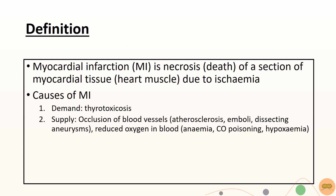MI refers to the death of myocardial tissue due to ischemia. Causes of MI can be split into demand and supply reasons. Demand for oxygen increases in conditions such as thyrotoxicosis. Supply reasons include occlusion of blood vessels and reduction in oxygen levels in blood.